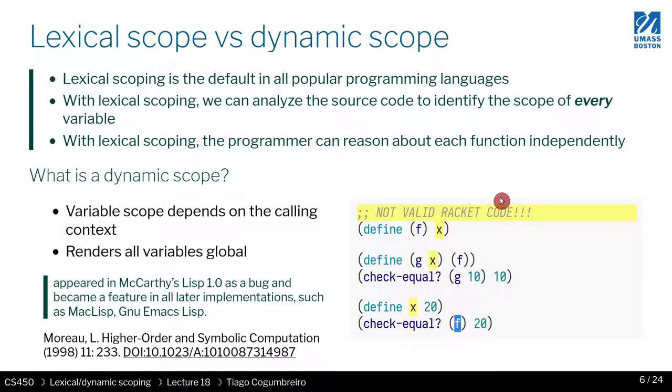That's what dynamic scoping is. Why is it useful? We'll see later in the course that dynamic scoping can be quite useful when you think about configuration—global configuration, globals. Whenever you want to have a notion of global variables that you still want to control what they refer to.